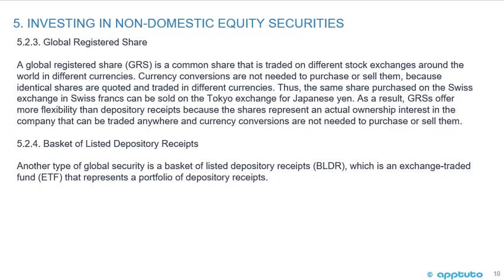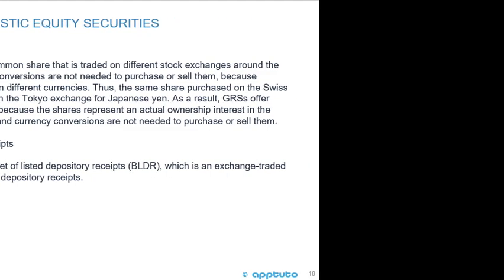The final type of global security is the basket of listed depository receipts, which is an exchange-traded fund (ETF) that represents a portfolio of depository receipts. That concludes this LOS on methods for investing in non-domestic equity securities.